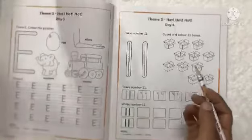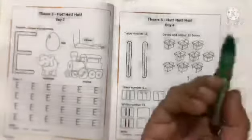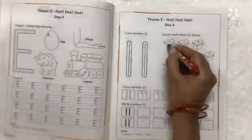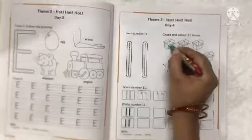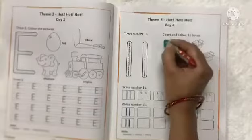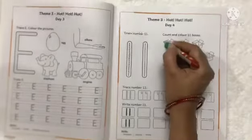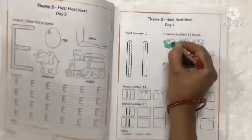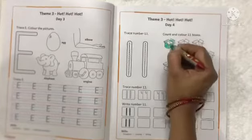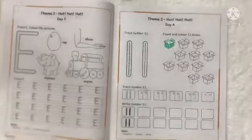We will colour them with green colour. So, let's start. We will colour these boxes. One by one we will colour them. You can colour them with the colour of your choice. Like this you will colour them.